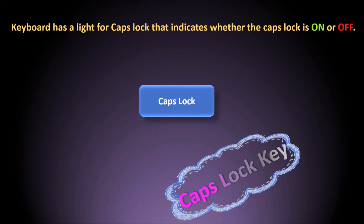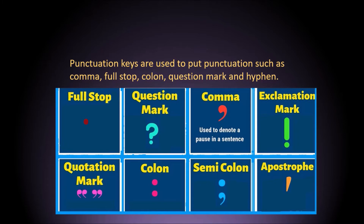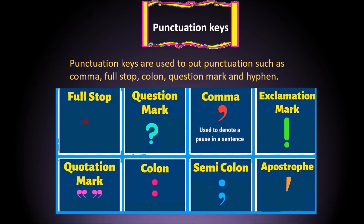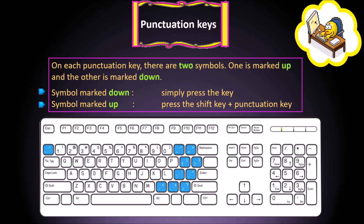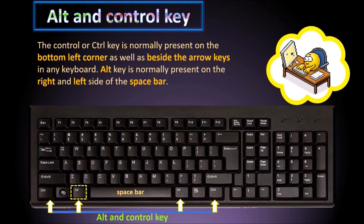Punctuation keys are used to put punctuation such as comma, full stop, colon, question mark, and hyphen. On each punctuation key there are two symbols — one marked up and one marked down. To type the symbol marked down, simply press the key. To type the symbol marked up, press the Shift key along with that punctuation key.